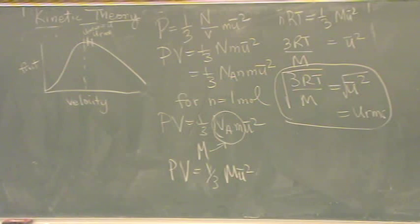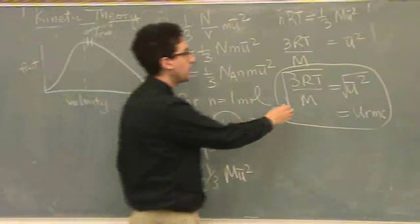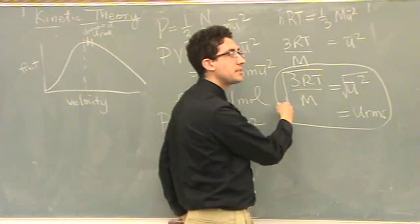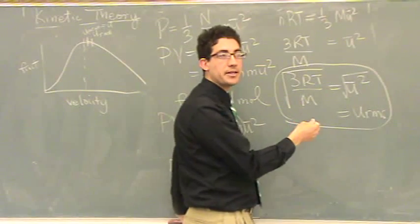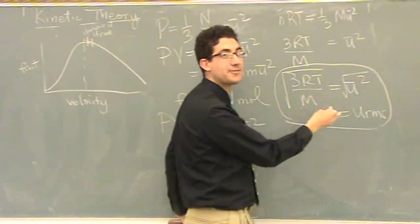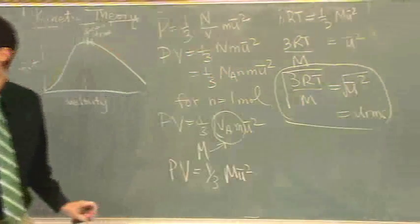But, essentially, if you find the root mean square velocity, you've essentially found the average. And it's essentially the top of the curve, though not exactly. To the right, a little bit. The nice thing about this formula, notice, you don't need to know anything about the molecule chemically. You only need to know its molar mass to find its root mean square velocity. That's the only factor.